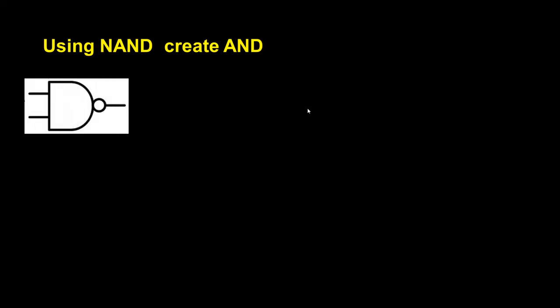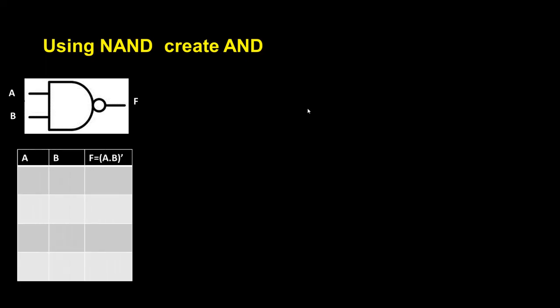Now let's see — I want to create an AND gate using a NAND gate. This is my NAND gate, I have two inputs. Based on A and B I am writing the possible input combinations.